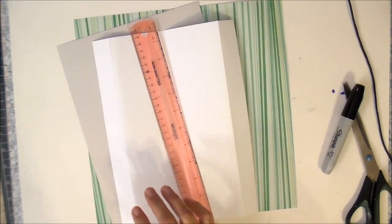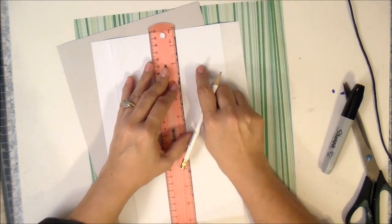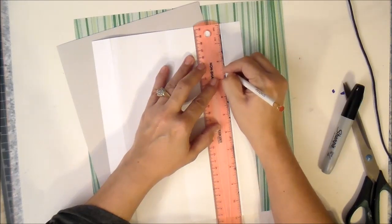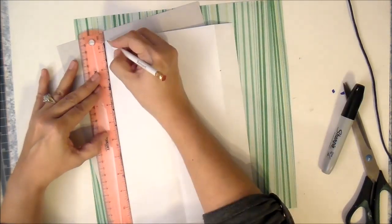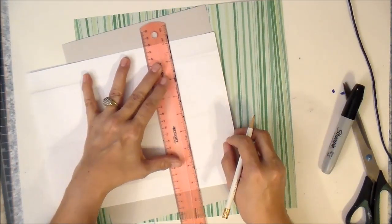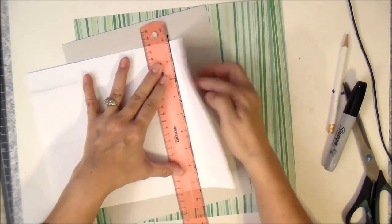Now you're gonna need a ruler just so that you can measure down about two and a half inches down from the top. Right there. Put your ruler right there where your two marks are, and you just fold this up.